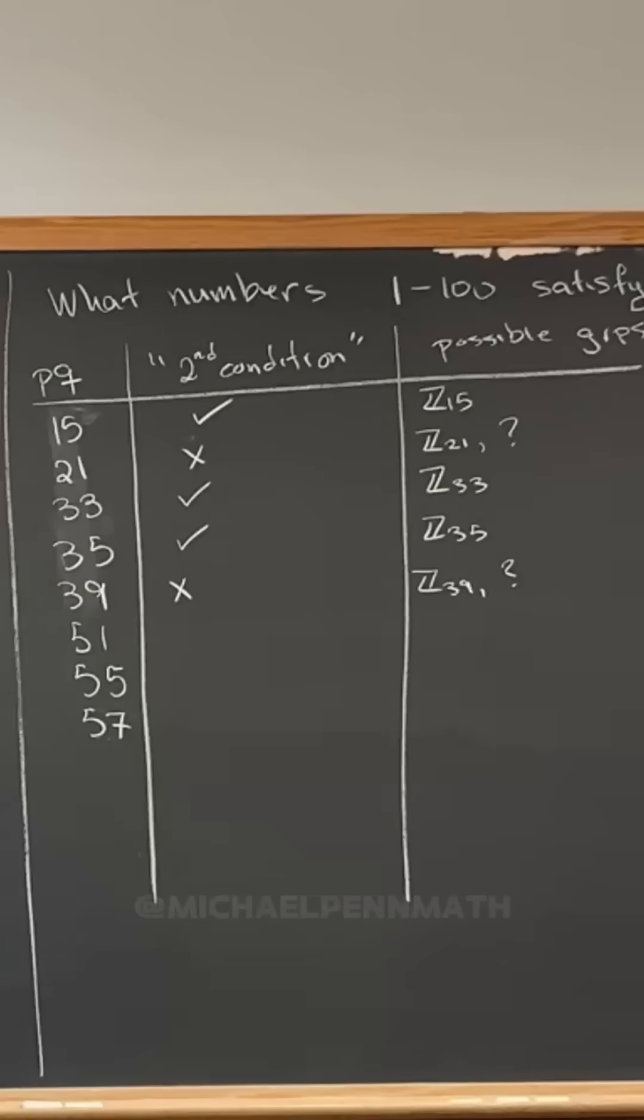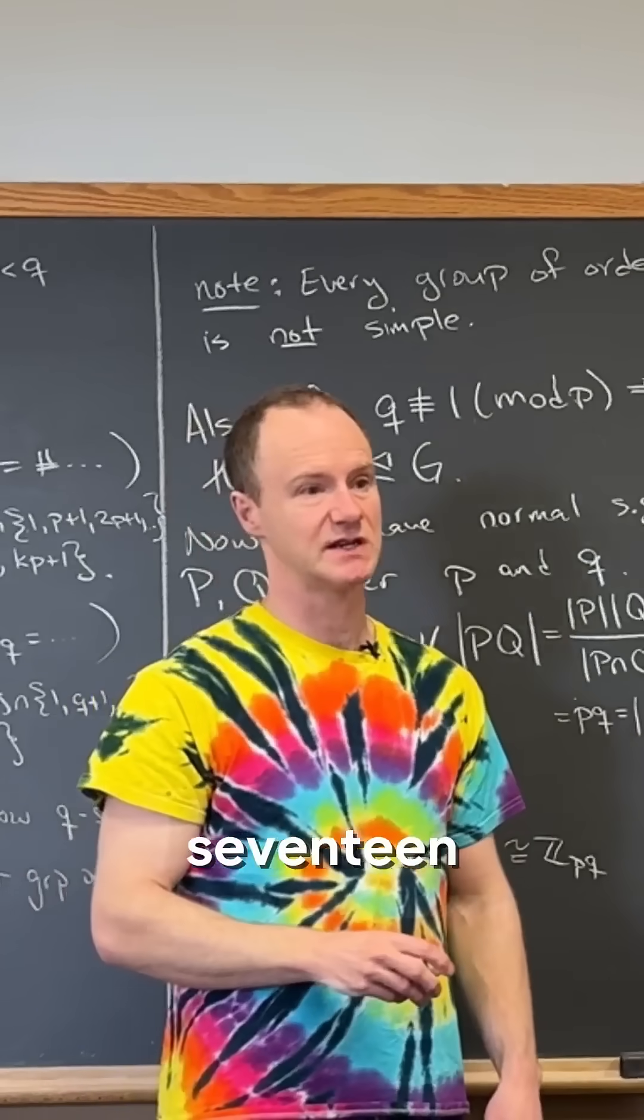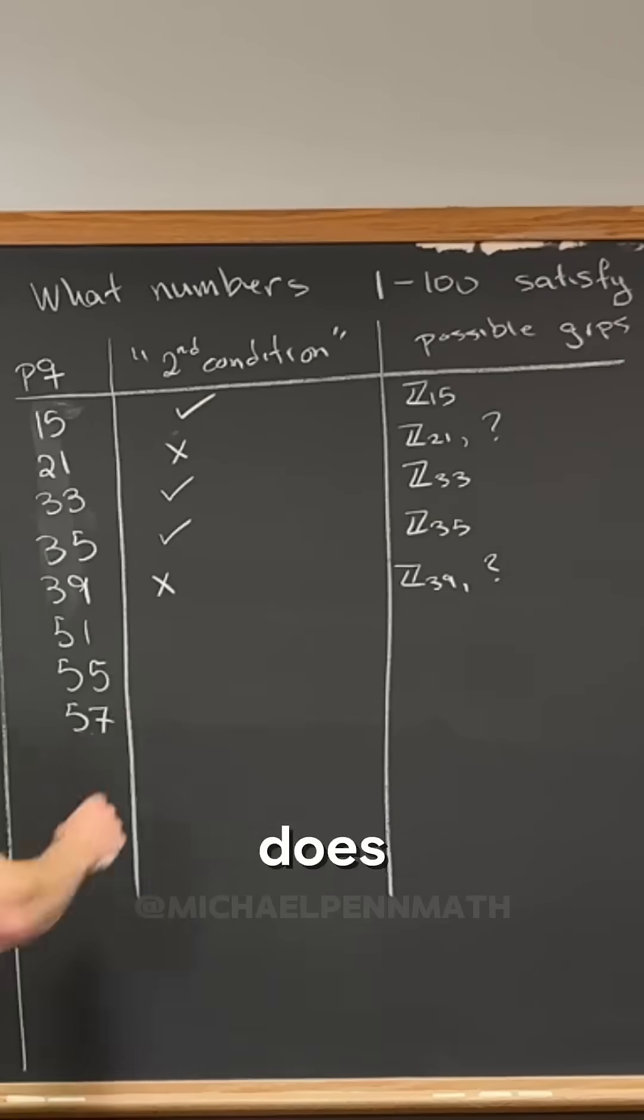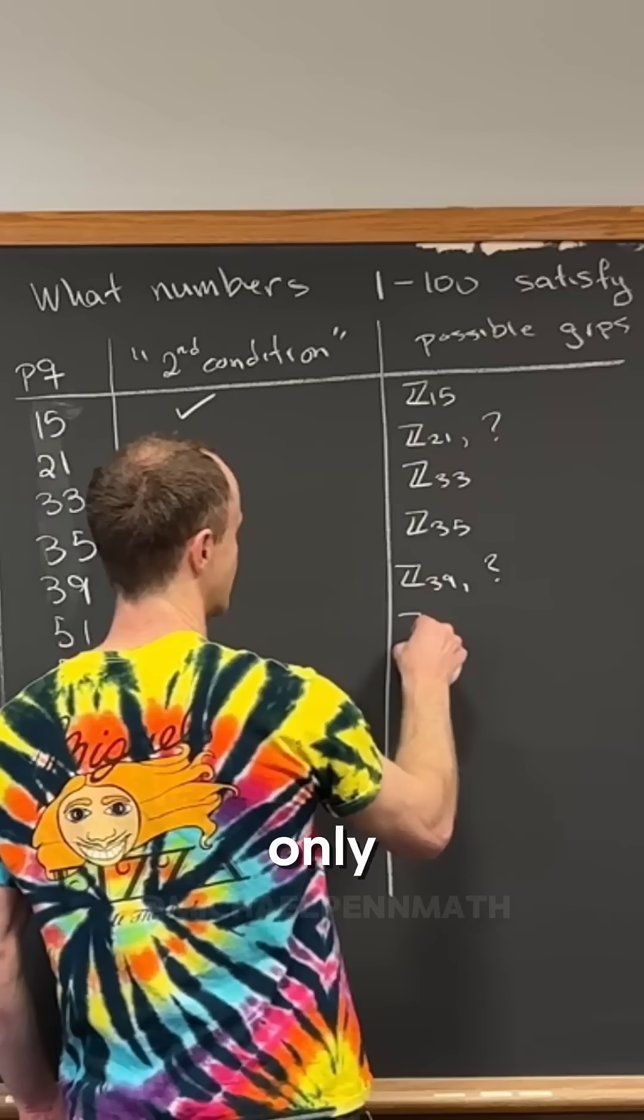Then what about 51? 51 was three times 17, right? So that does satisfy, right? Because 17 is not congruent to one mod three. So that means that there's only one, Z51.